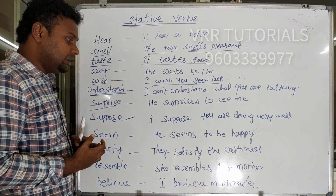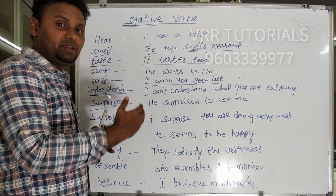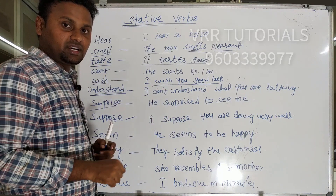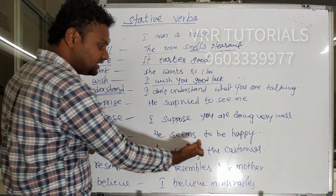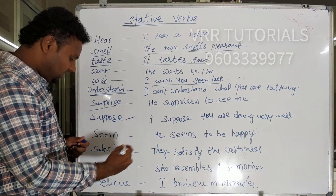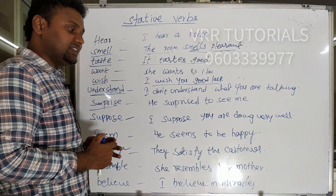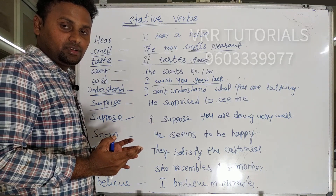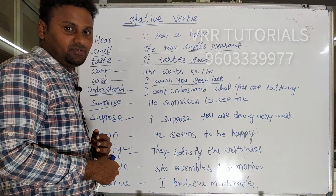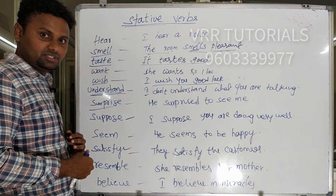Next: 'seem.' He seems to be happy — he appears happy. Saying 'he is seeming to be happy' in continuous tense is incorrect. He seems to be happy. Next: 'satisfy.' They satisfy the customers. Don't say 'they are satisfying the customers.' So: they satisfy the customers — that's it.